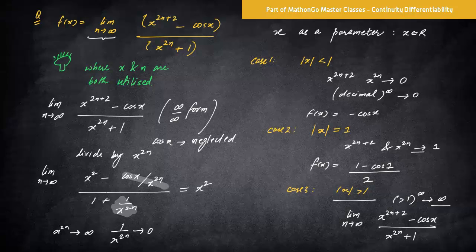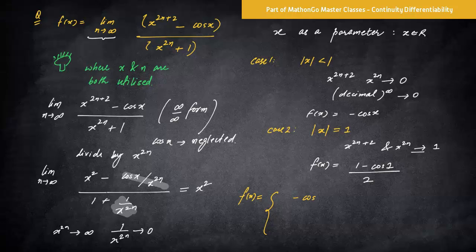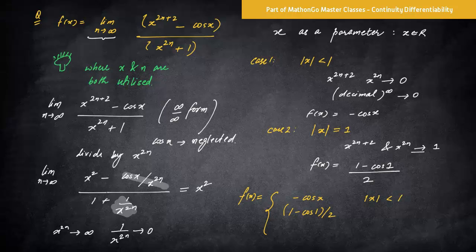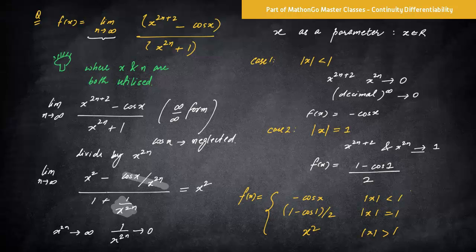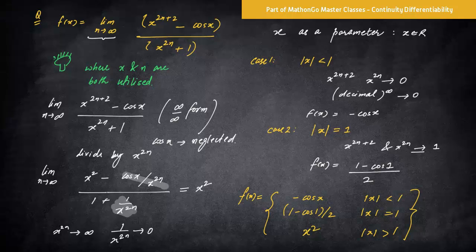So now, if somebody asks you, what is the definition of f(x)? So you would say that f(x) is minus cos x for modulus x less than one. It is one minus cos one by two for mod x equal to one. For mod x greater than one, it is x square. So this is the function definition. And now any question based on this could be solved, even if it is continuity or differentiability.